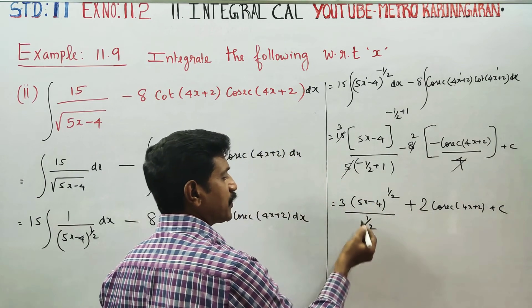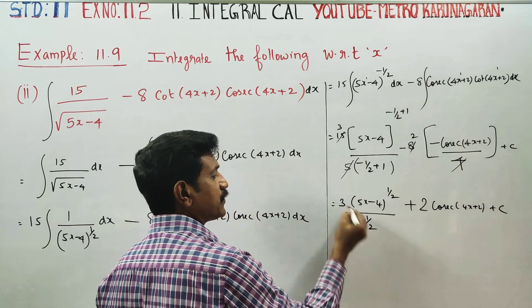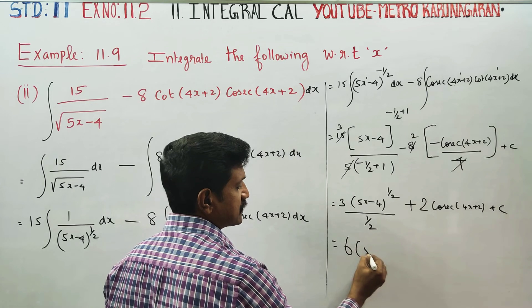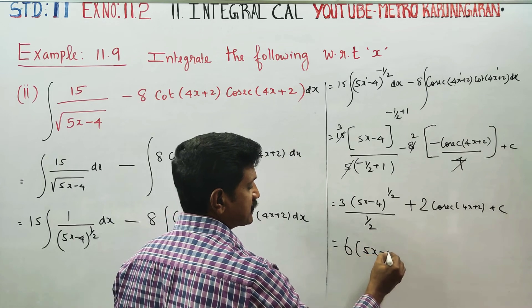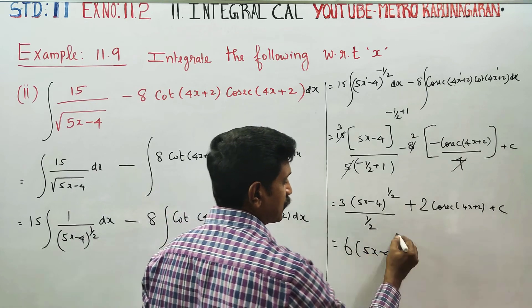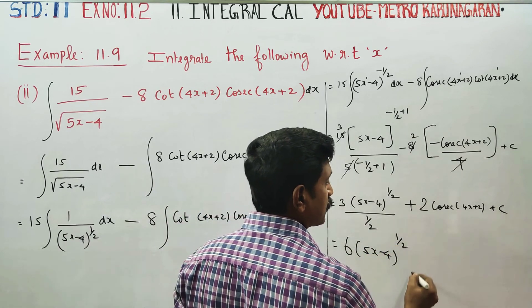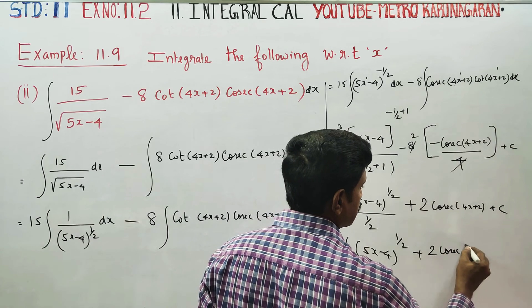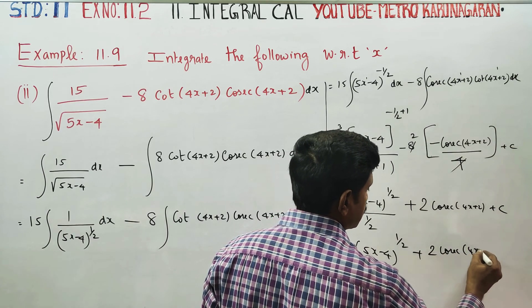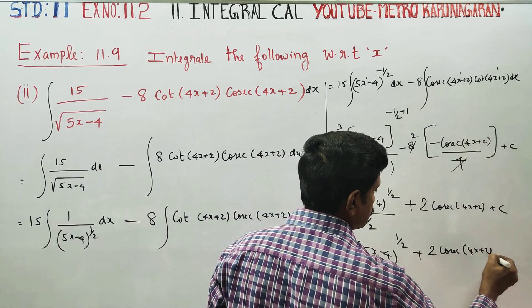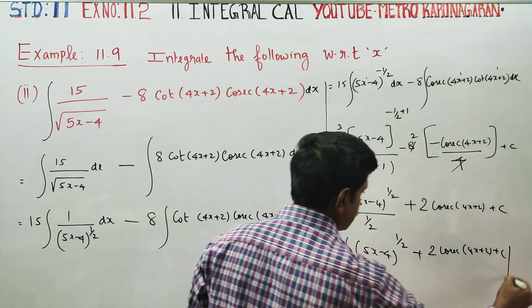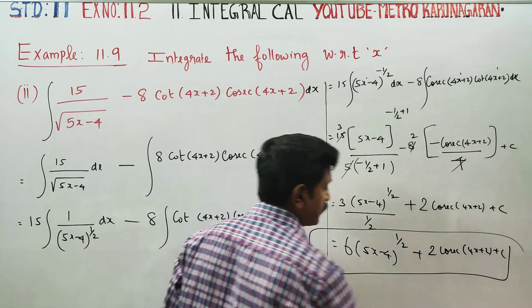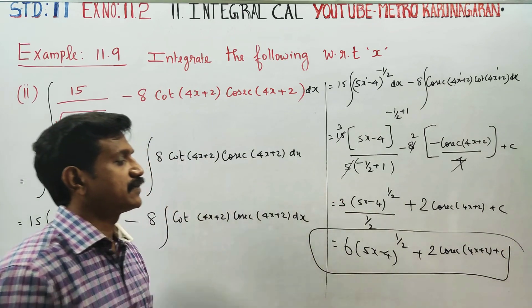1 by 2 is reciprocal. 2 times 6: (5x minus 4) to the power of 1 by 2, plus 2 cosecant(4x + 2) plus c. This is your final answer. Thank you.